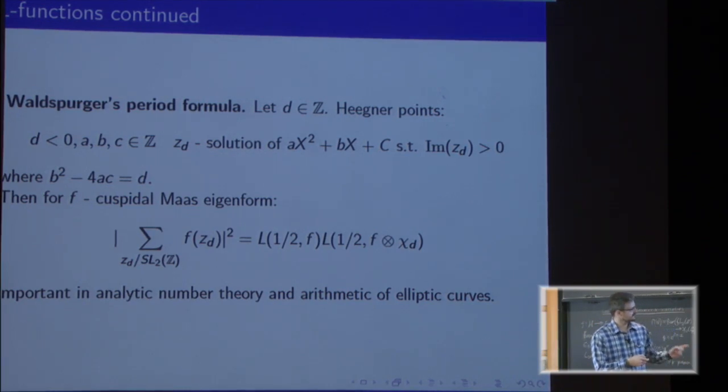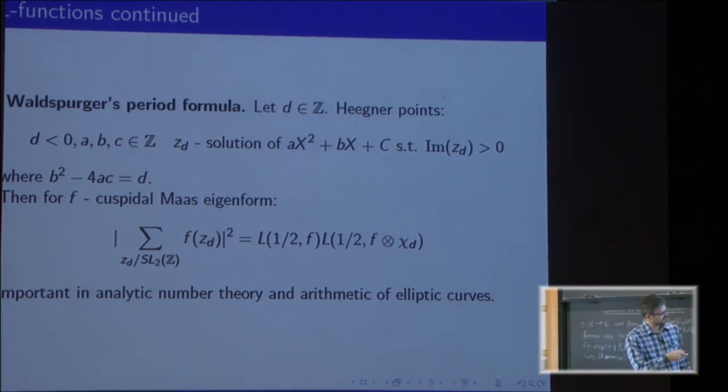We take a solution which lives in the upper half plane. We take one of these Maass forms, and we take a sum over all such solutions for a fixed d modulo SL2(Z). So there's a finite number of them. The square of the modulus of such a number is related to a central value of the associated L function times the central value twisted by a certain character.